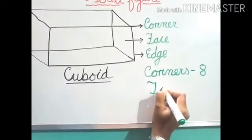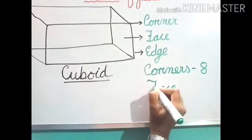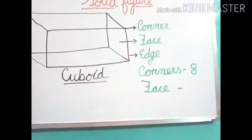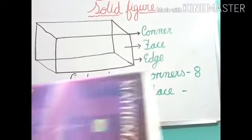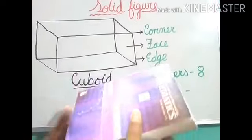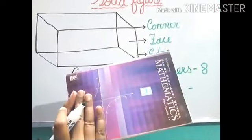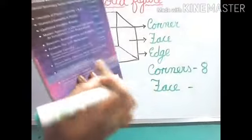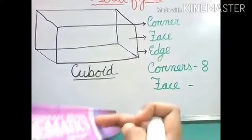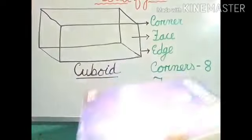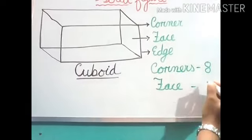Now, face. In this figure, you can't understand the face properly. For that, I am showing you that example which I have shown you earlier. Face means this portion we call face, this plane portion we call face. So, 1, 2, 3, 4, 5, 6. So total how many faces? 6 faces.